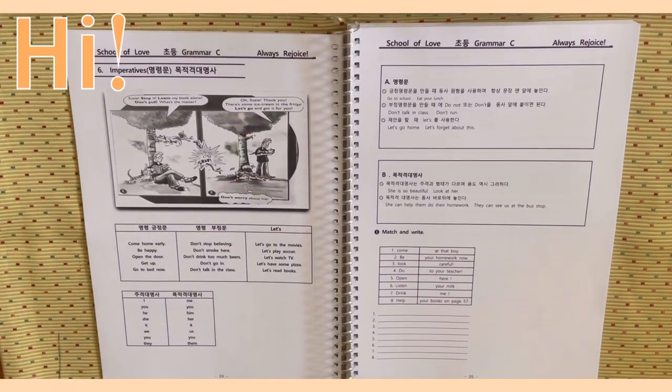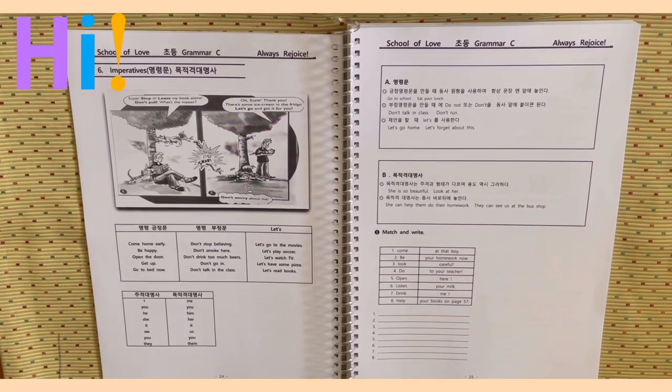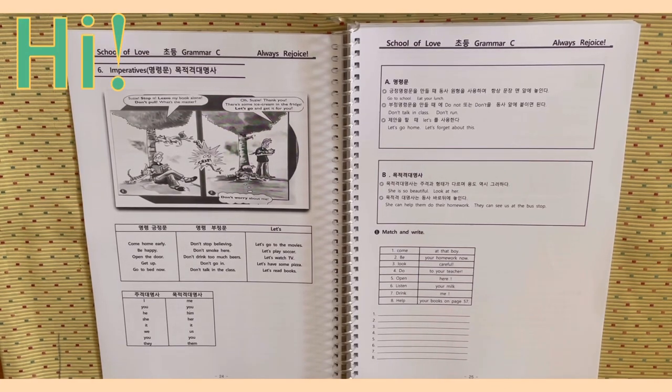Hello everyone, it's Myunkle John. Today I am going to read Grammar C Unit 6 Chapter 6, Imperative 명령문 and 목적격 대명사.